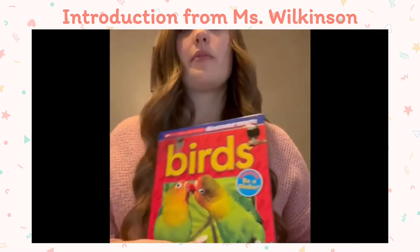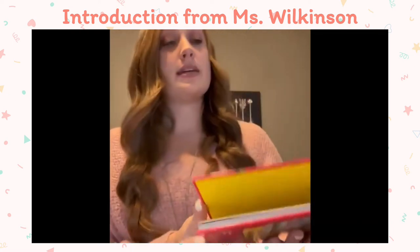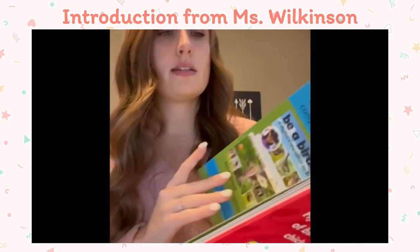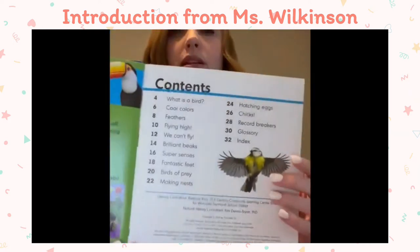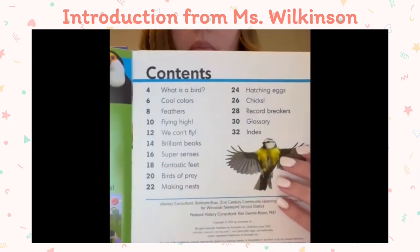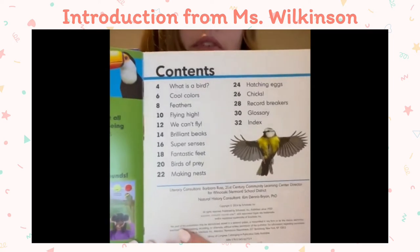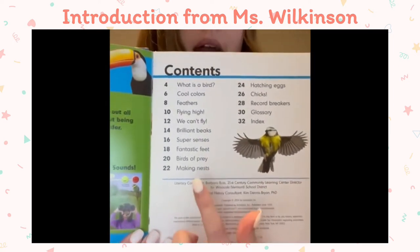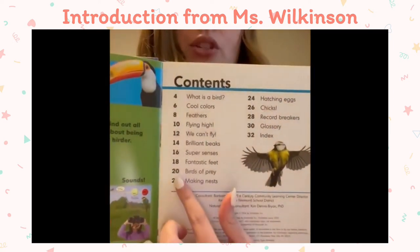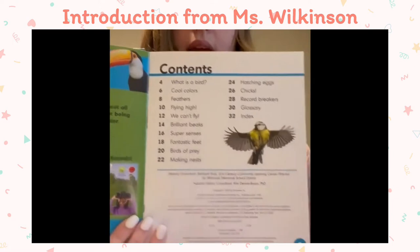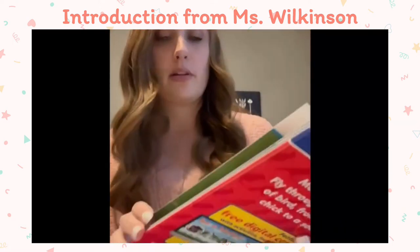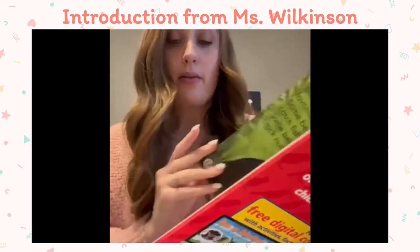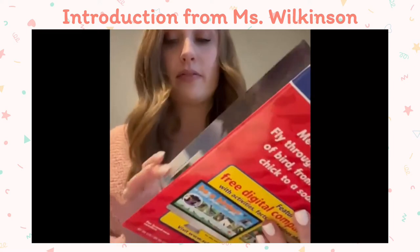The next text feature is the Table of Contents, which tells us where all the information is in our book. I want to look for information about birds of prey, so I'm going to turn to page 20 according to my Table of Contents to find out more about birds of prey.